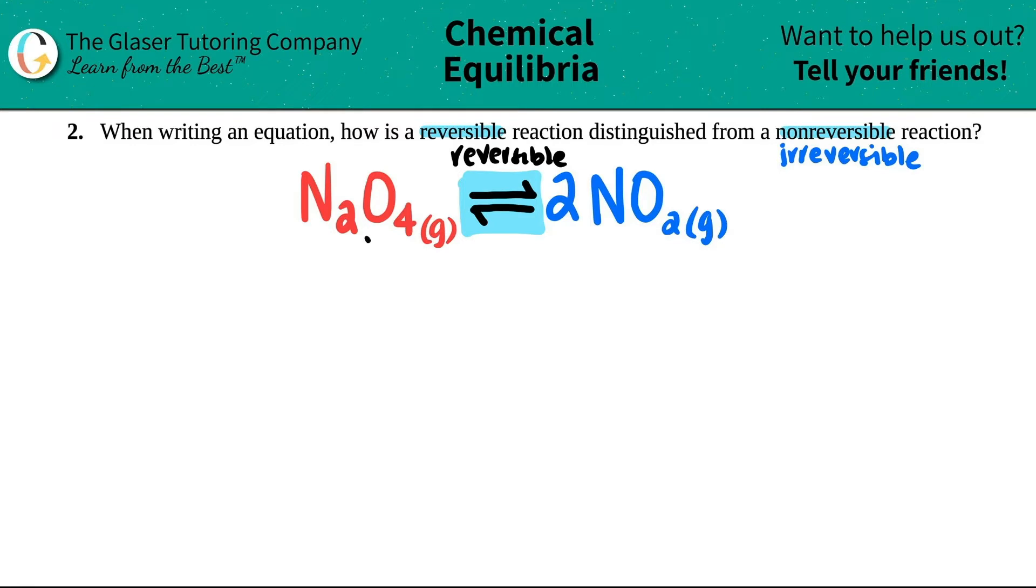That means that the forward reaction is happening. N2O4 is being produced to two NO2s. And the backward reaction or the reverse reaction is happening, where two NO2s is being made into N2O4.